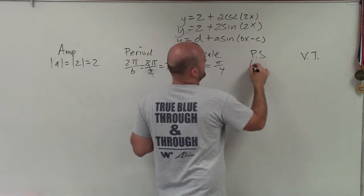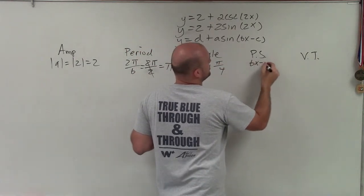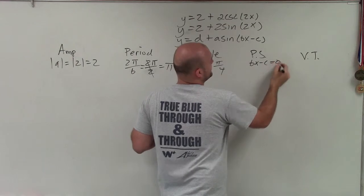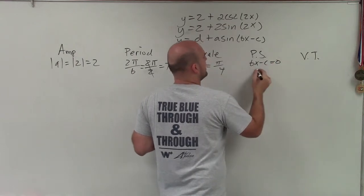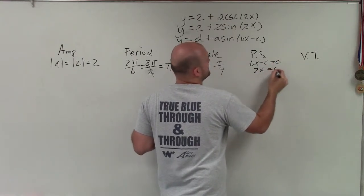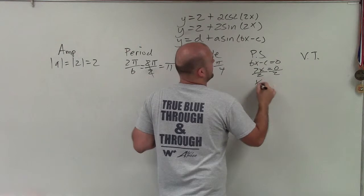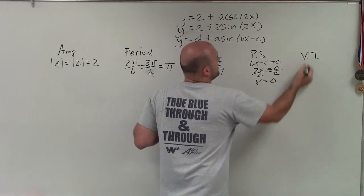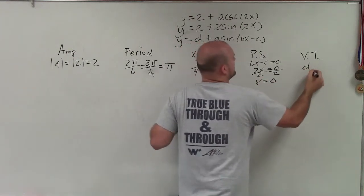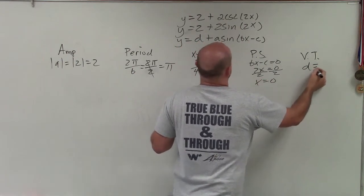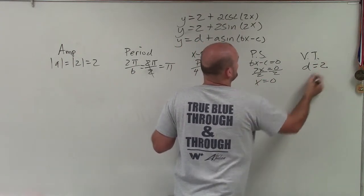Phase shift: I take whatever's inside my function and set it equal to 0. That's 2x equals 0, divided by 2, so x equals 0. And vertical transformation is d, which is 2.